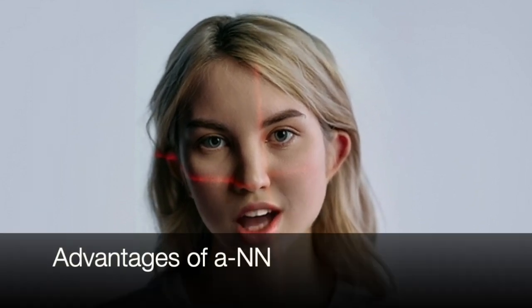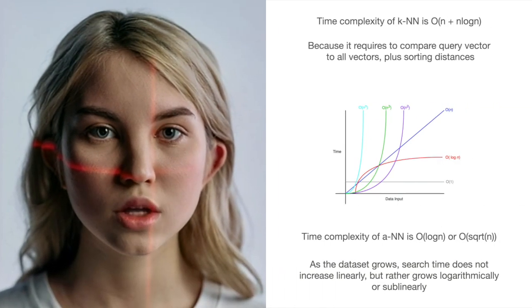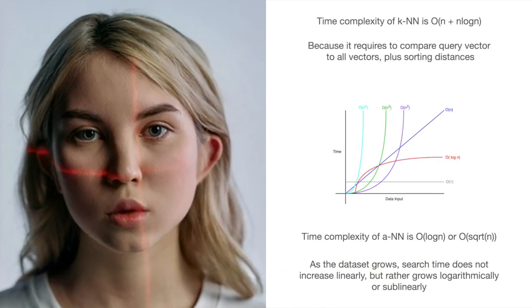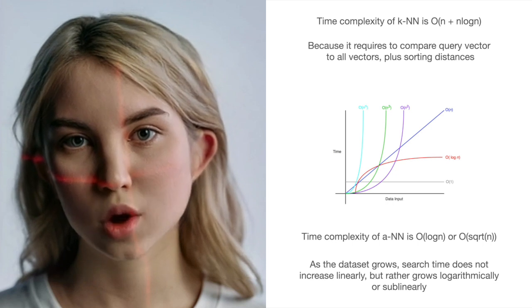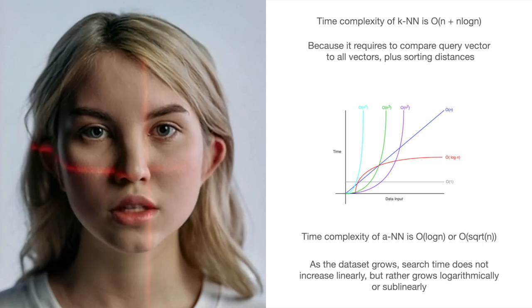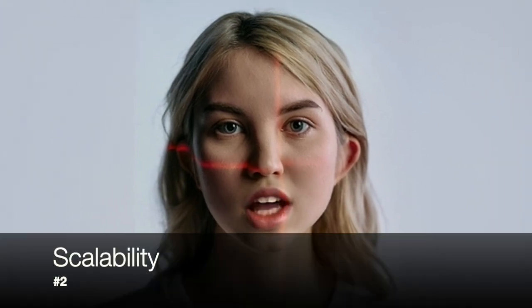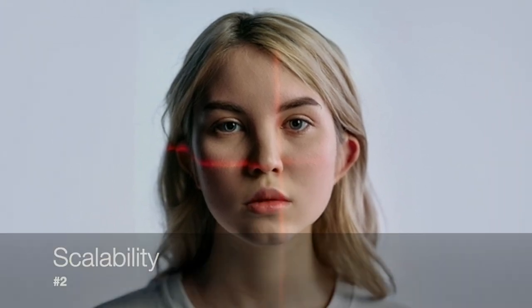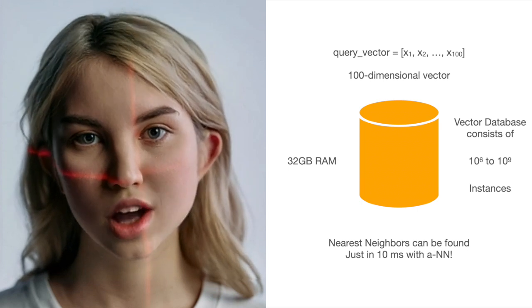Pros of ANN — Efficiency: ANN algorithms can significantly reduce computational time compared to KNN by employing techniques like data indexing, data partitioning, and pruning. Scalability: ANN methods can handle large-scale datasets efficiently, allowing similarity search in high-dimensional spaces.